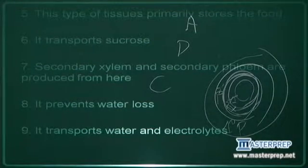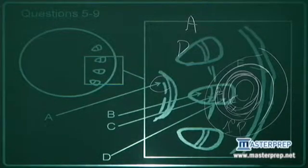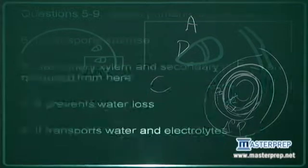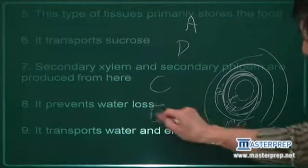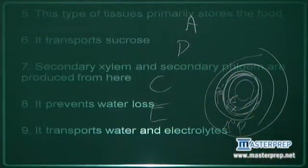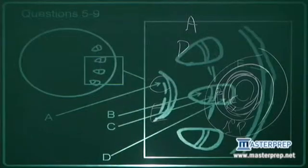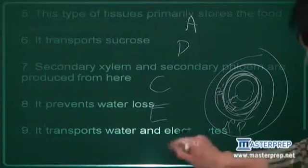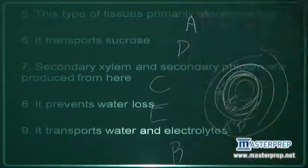Number eight, it prevents water loss. Water loss is prevented by the outermost layer, which is epidermis. So number eight is E. And number nine, it transports water and electrolytes. This is the role of xylem, which is indicated by B.